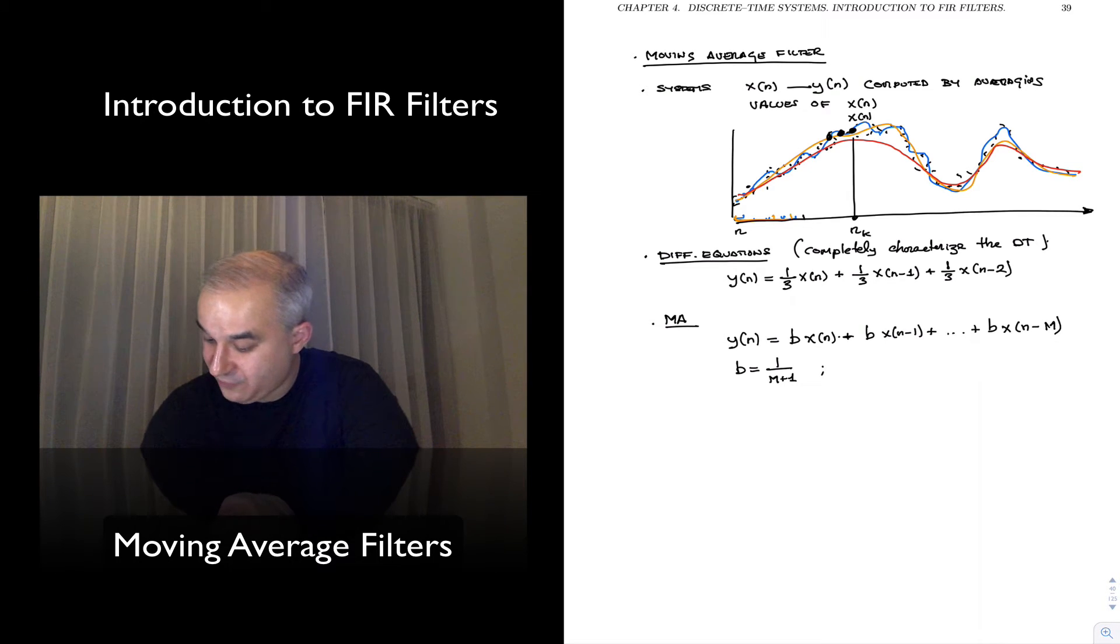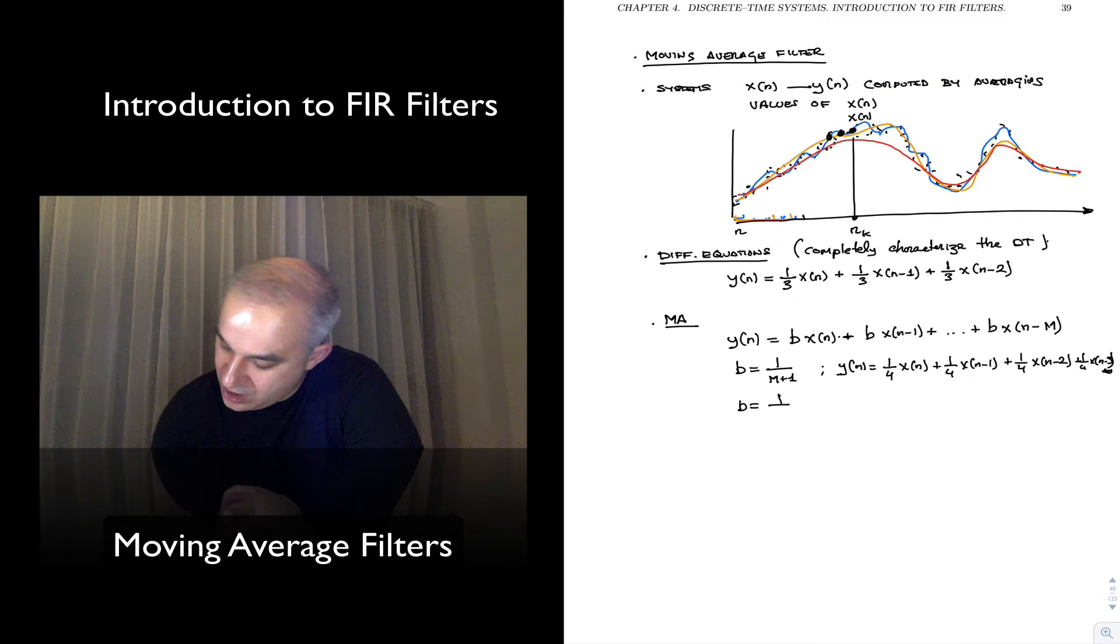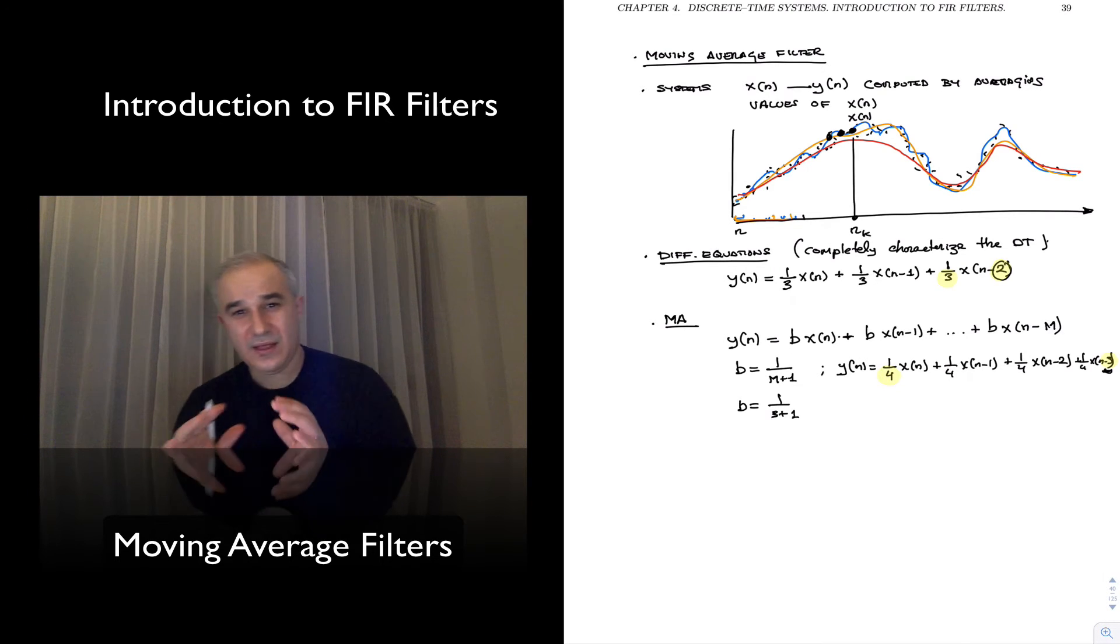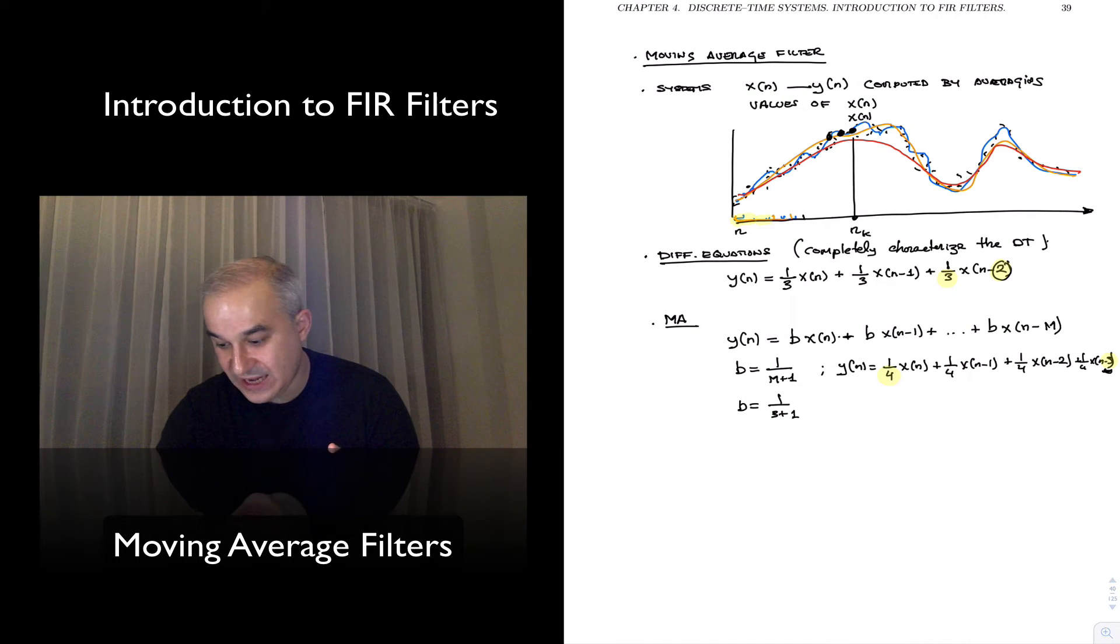An example is what we did before, or if we do, for instance, a 4-point, it will be y of n equals 1 over 4 x of n plus 1 over 4 x of n minus 1 plus 1 over 4 x of n minus 2 plus 1 over 4 x of n minus 3. You can see here, 3, so the b equals 1 over 3 plus 1. The moving window is sliding, you are averaging them together.